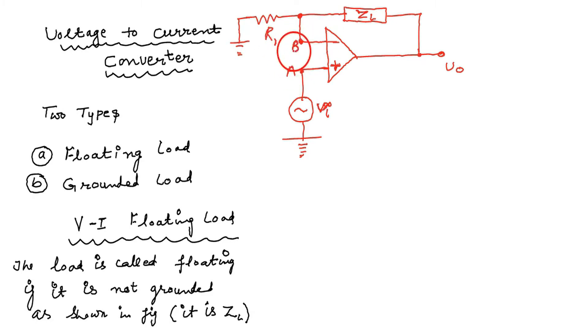This resistor is then grounded, R1. The load will act as feedback resistor also, feedback component also. Now at the node A and B the voltage will be same.